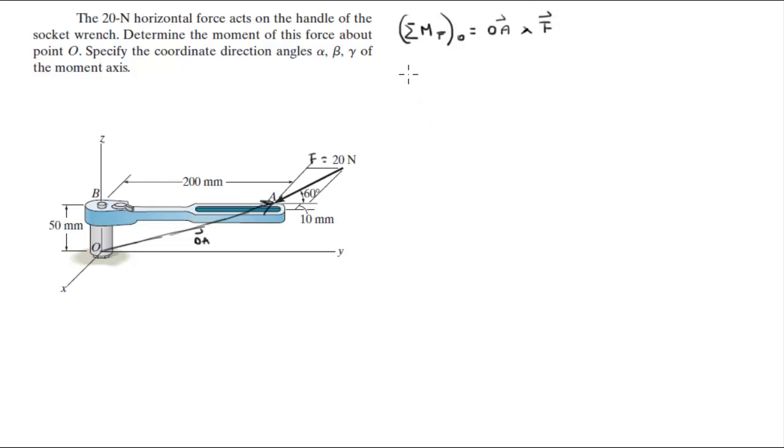So let's find all the points involved. O sits at the origin. A sits at negative 0.01i plus 0.2j plus 0.05k. So vector from O to A is A minus O, but O is the origin so it's vector A. So it's equal to negative 0.01i plus 0.2j plus 0.05k.